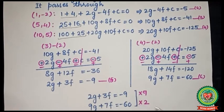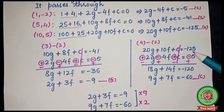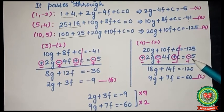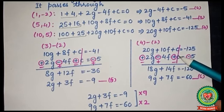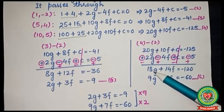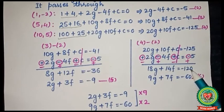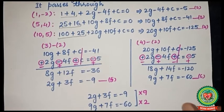Similarly, subtract equation 2 from equation 4: (20g + 10f + c) - (2g - 4f + c) = -125 - (-5). The c terms cancel, giving 18g + 14f = -120. Dividing through by 2 gives 9g + 7f = -60. Mark this as equation number 6. Now we solve equations 5 and 6 for g and f.